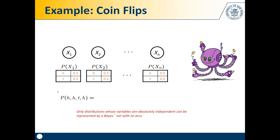Let's look at an example with coin flips. The conditional probability tables for each node have no parents, so we just represent them as P(X_1), P(X_2), and so on. What's the probability of heads, heads, tails, heads? Since we assume absolute independence, it's 0.5 times 0.5 times 0.5 times 0.5.